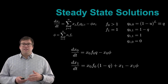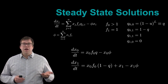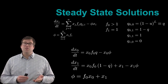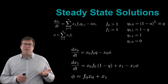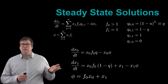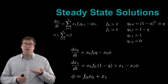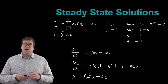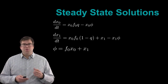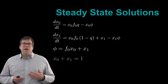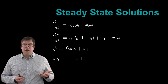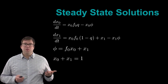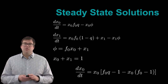Similarly, dx₁/dt is written by taking every term in the summation. The average fitness phi has the simple form f₀ x₀ + x₁ — the fitness of the master sequence times its frequency, plus the frequency of all other sequences, which all have fitness one so that term simplifies. Recognizing that x₀ + x₁ = 1, we can reduce all four equations into one single equation giving the dynamics for dx₀/dt.